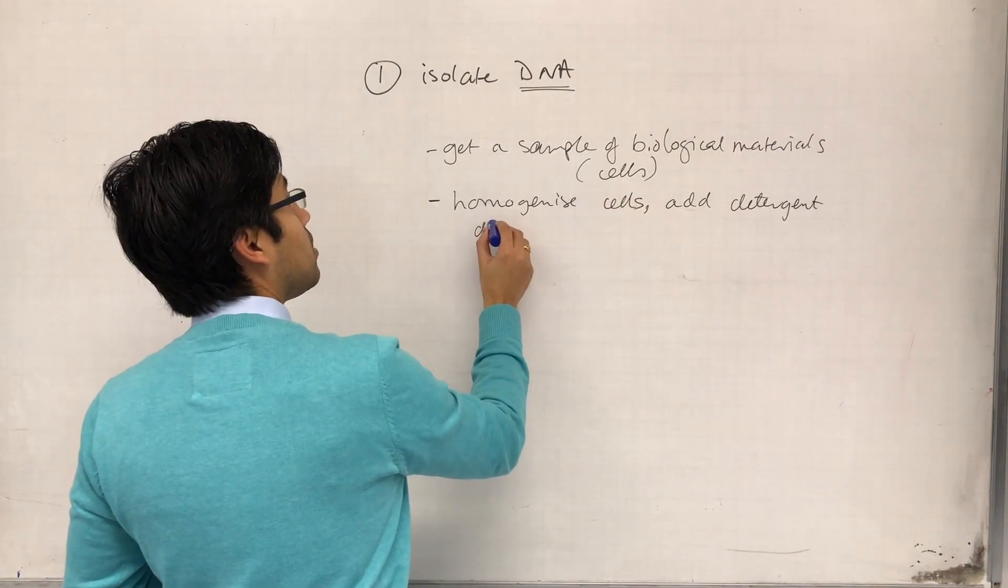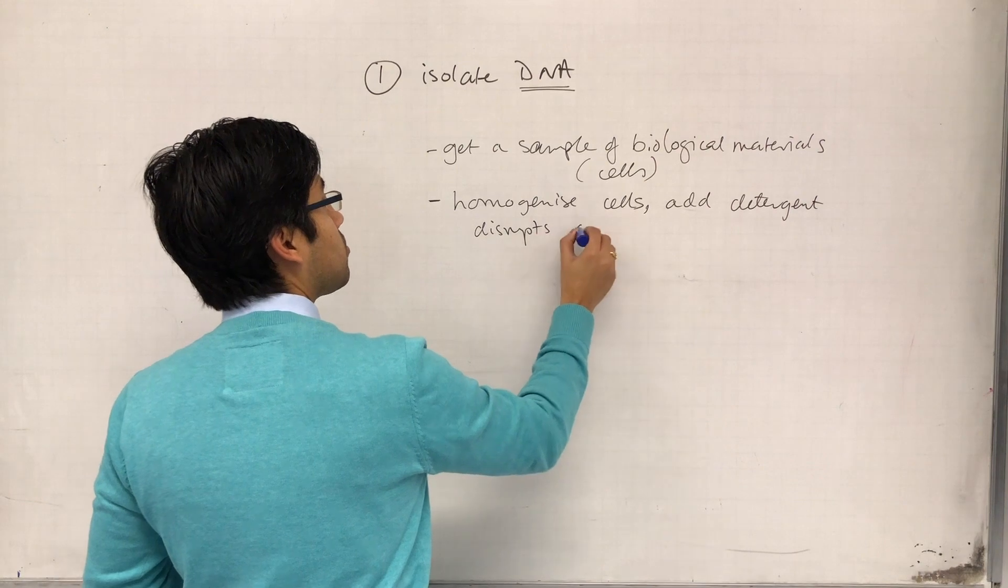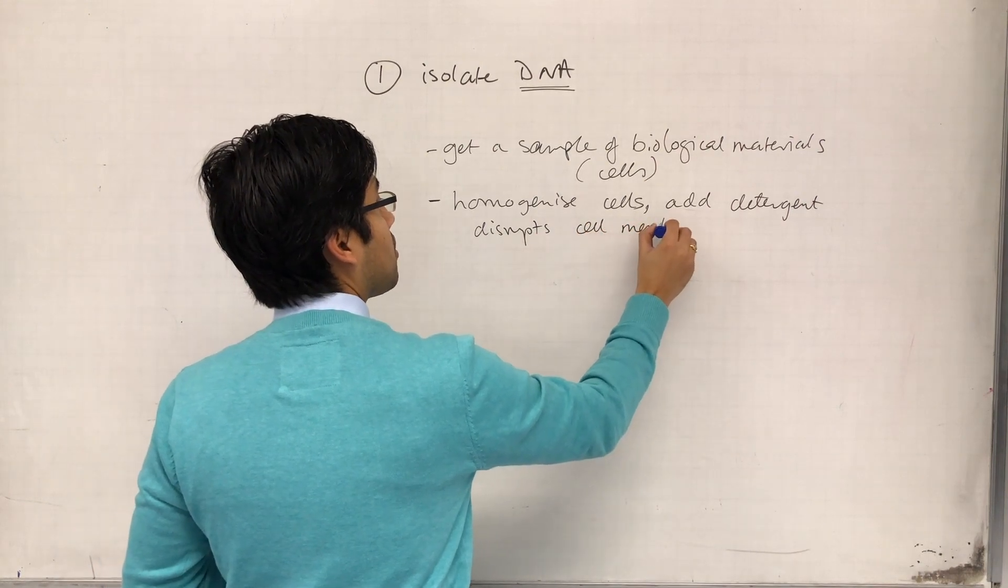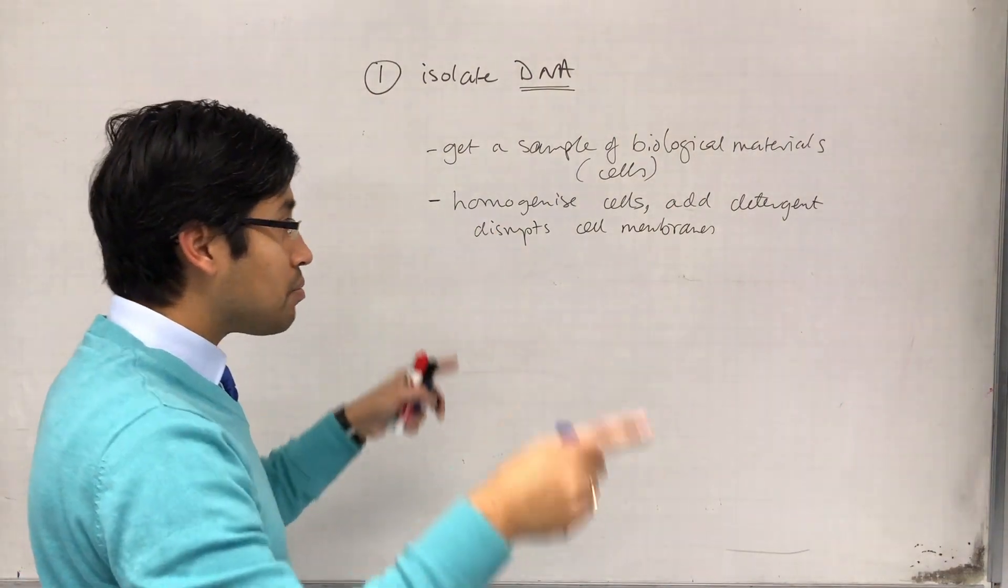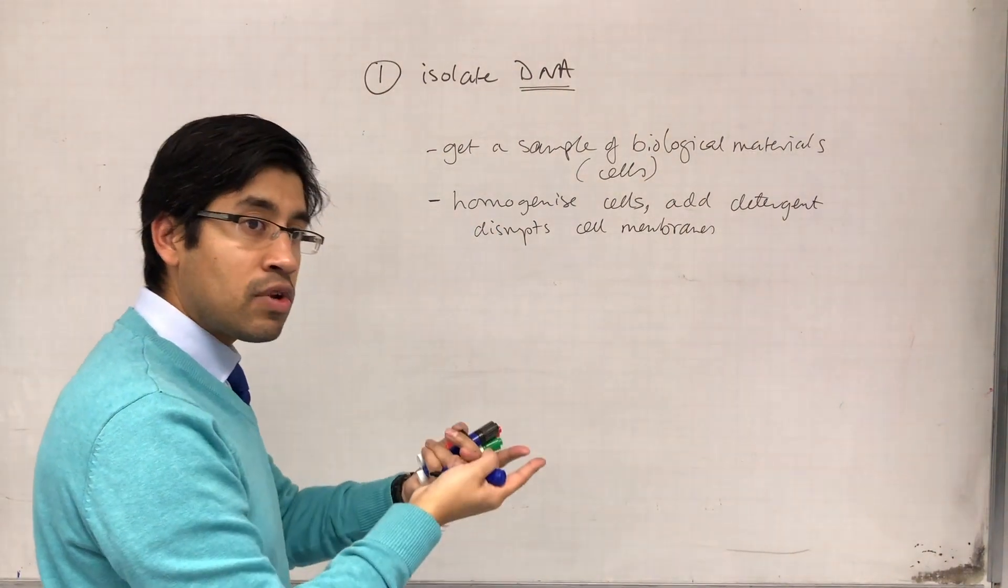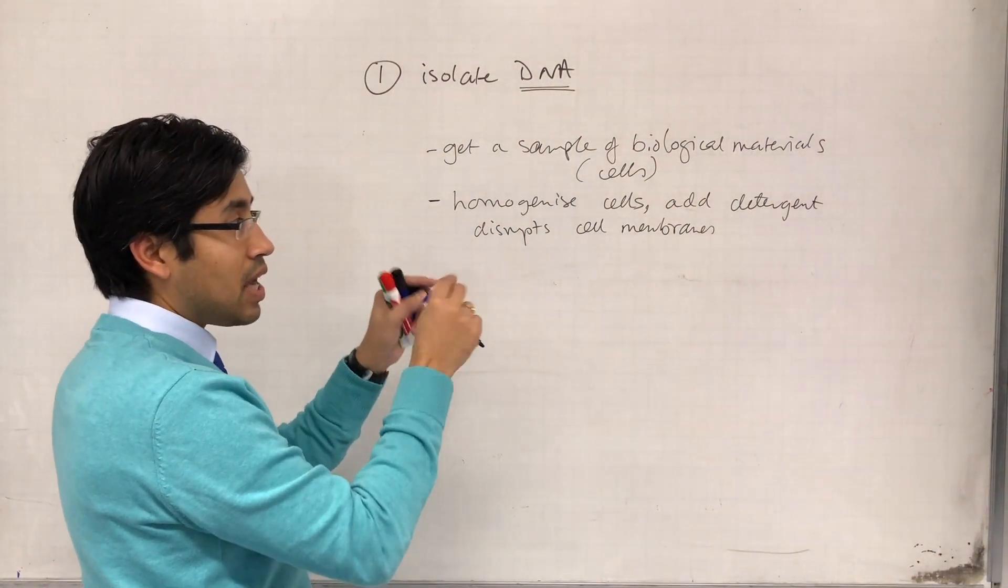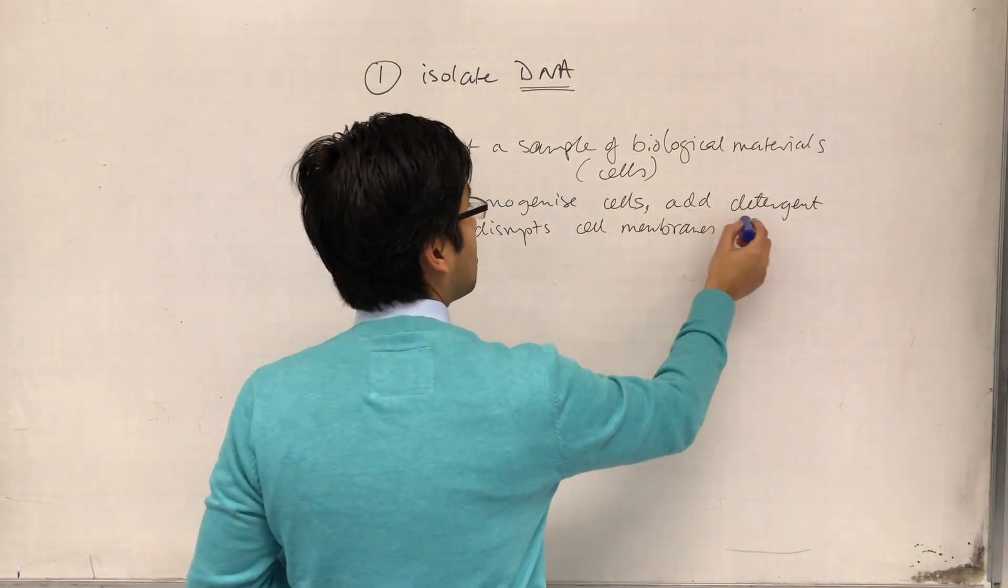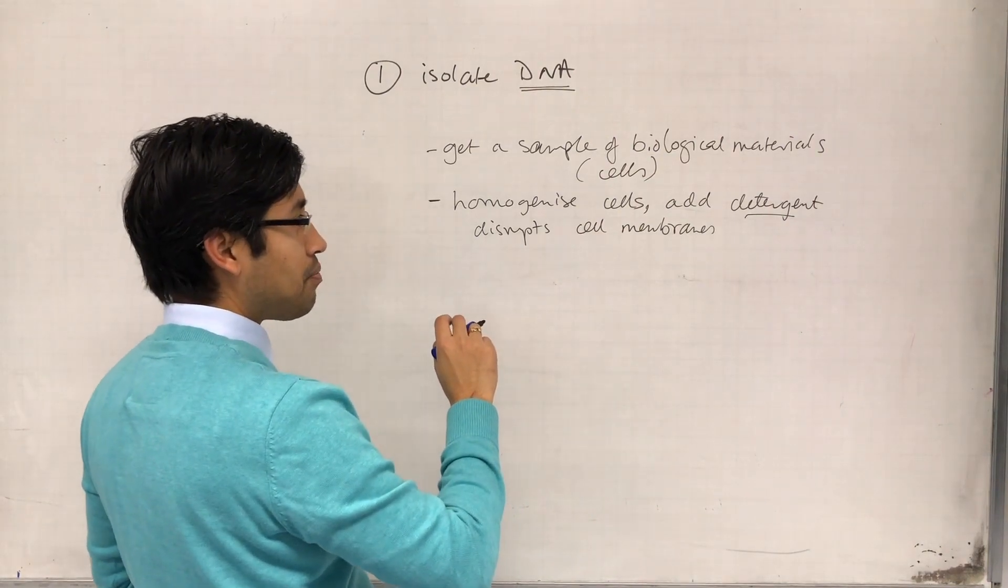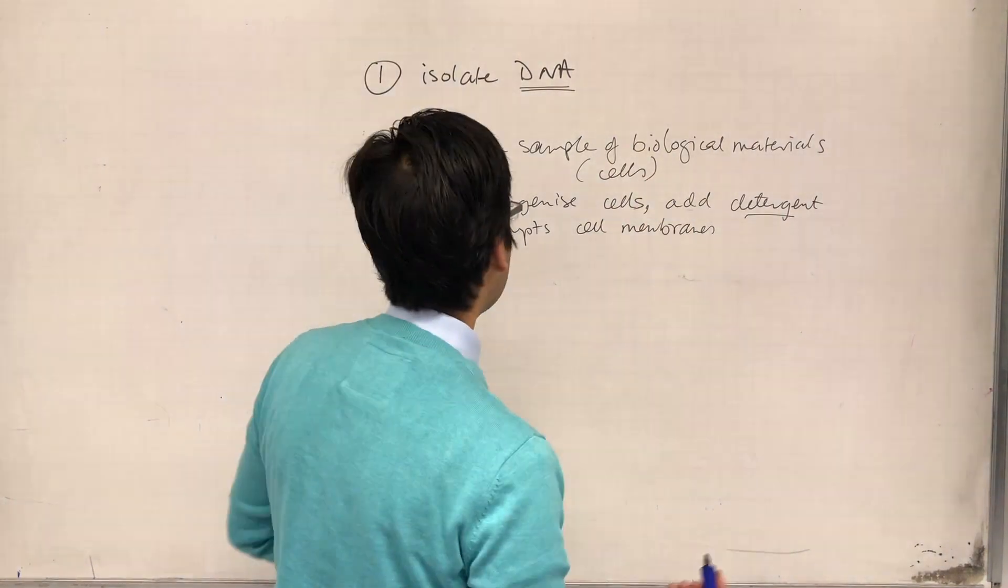So the detergent disrupts the cell membranes, and we're even talking about the outside membrane, and we're talking about the nuclear envelope as well, because we need to get to the DNA that's in the nucleus. So the detergent disrupts the cell membranes, and the DNA can come out then.